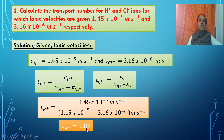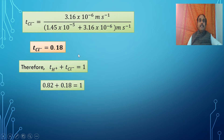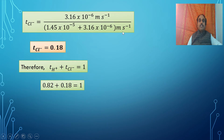Therefore, the transport number of H⁺ is 0.82. Similarly, the transport number of Cl⁻ is 3.16 × 10⁻⁶ divided by (1.45 × 10⁻⁵ plus 3.16 × 10⁻⁶) meter per second. The units cancel and the answer is 0.18. So t(H⁺) = 0.82 and t(Cl⁻) = 0.18.